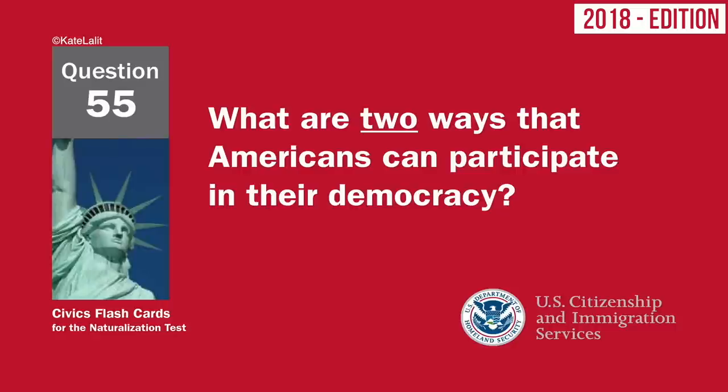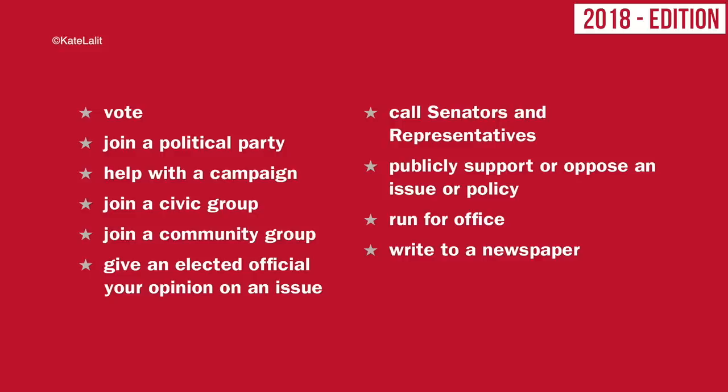What are two ways that Americans can participate in their democracy? Vote. Join a political party. Help with a campaign. Join a civic group. Join a community group. Give an elected official your opinion on an issue.